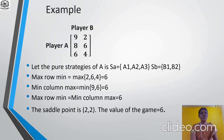See the example. Player A, Player B. The row entries are 9, 2, 8, 6, 6, 4. We have to find row minimum and column maximum for each row and each column. For rows, we find the minimum entries: for row (9, 2), the minimum is 2; for row (8, 6), the minimum is 6; for row (6, 4), the minimum is 4.